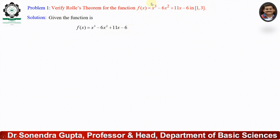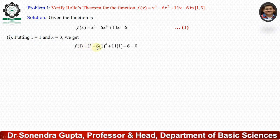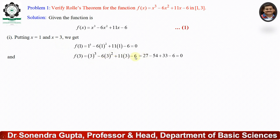We first find the value of the function at x = 1 and x = 3. Putting x = 1 in the equation: f(1) = 1³ − 6(1²) + 11(1) − 6 = 1 − 6 + 11 − 6 = 0. Similarly, f(3) = 3³ − 6(3²) + 11(3) − 6 = 27 − 54 + 33 − 6 = 0. We have seen that f(1) = f(3) = 0, so the first condition is fulfilled.